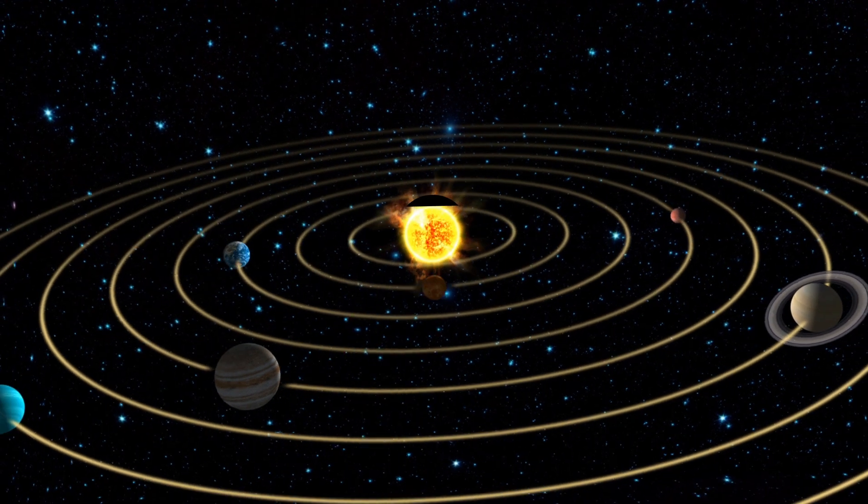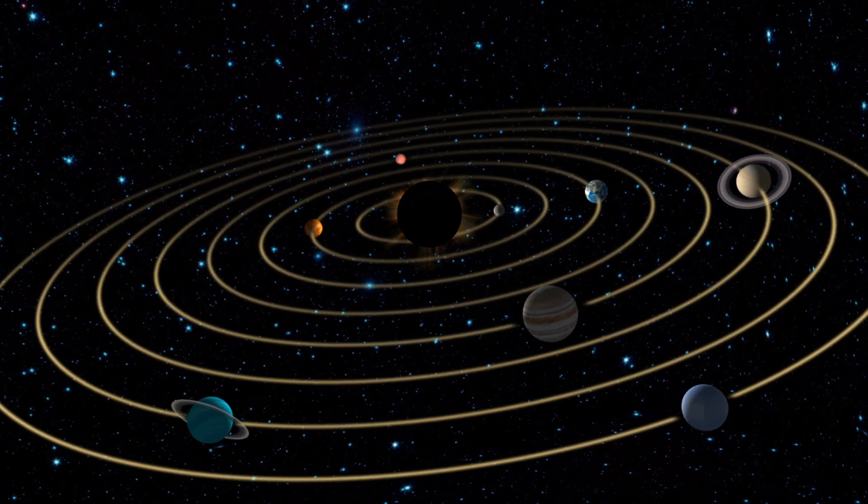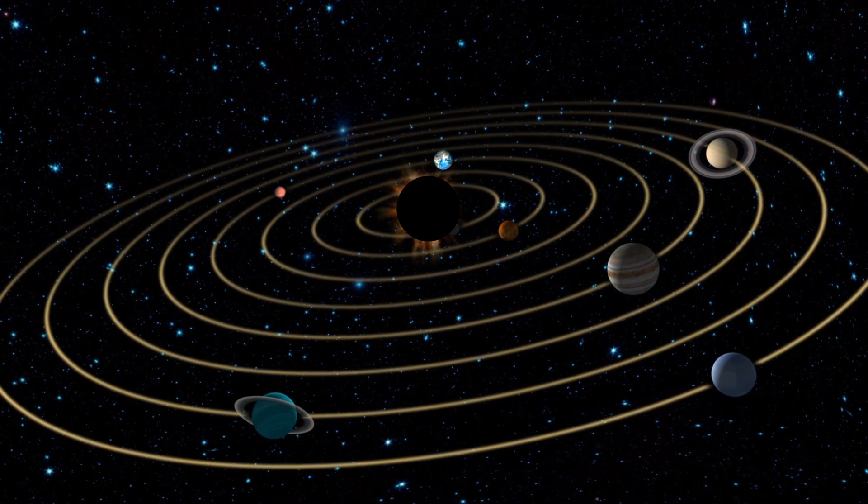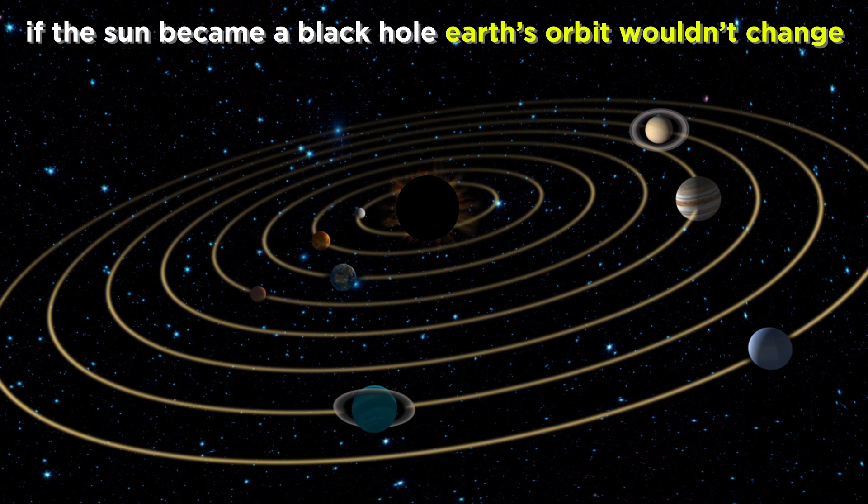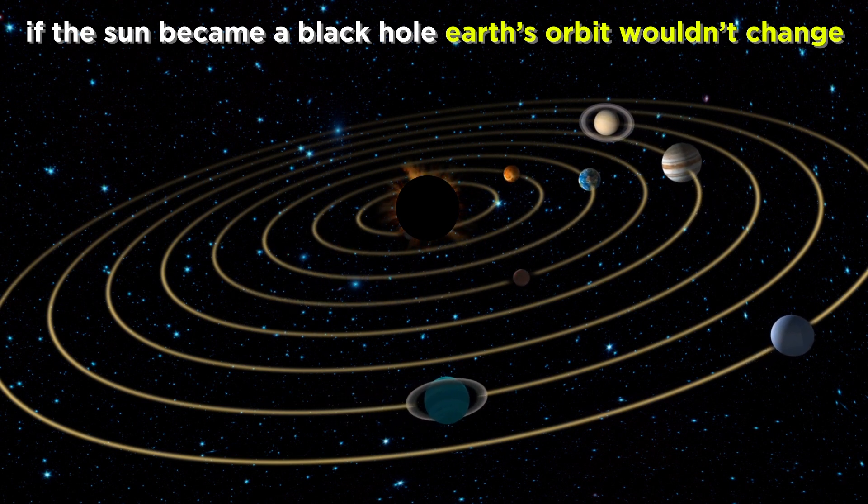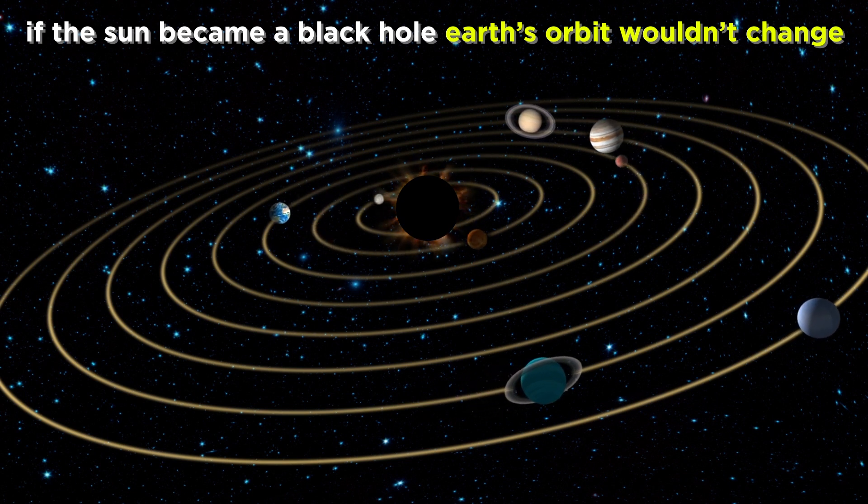In other words, if our sun became a black hole today, we would certainly be in trouble in the sense that we wouldn't receive any more light and heat. But surprisingly, Earth's orbit wouldn't change at all. The black hole would still have the same mass as the sun, so orbits would remain unperturbed.